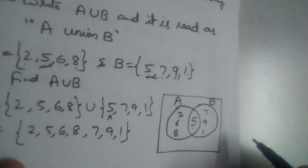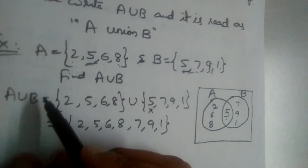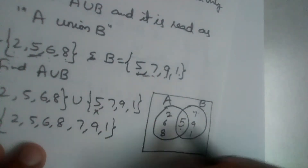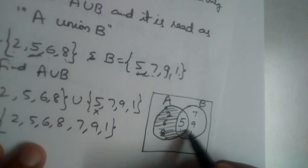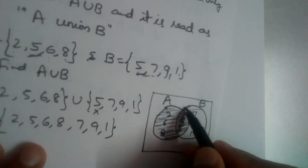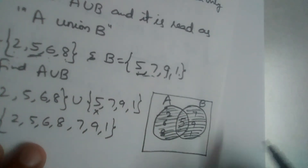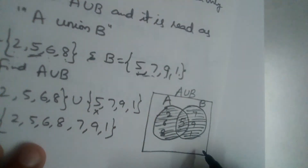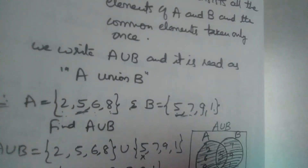To represent A union B by shading this diagram, we shade everything — the left region, the intersection, and the right region. The entire shaded area is A union B. In the next video we will learn what intersection is.